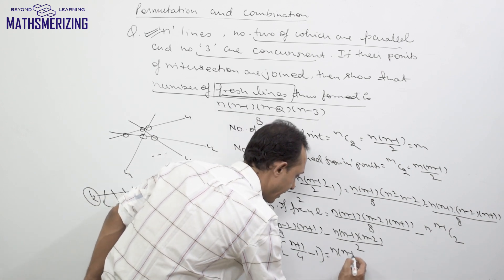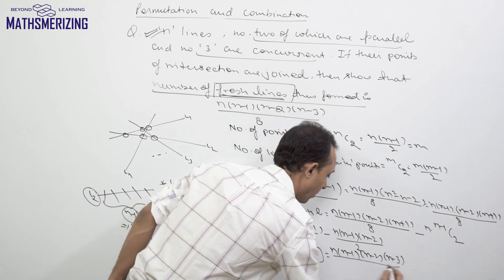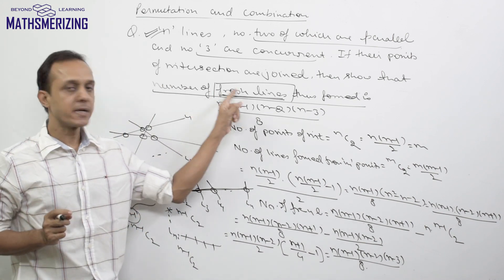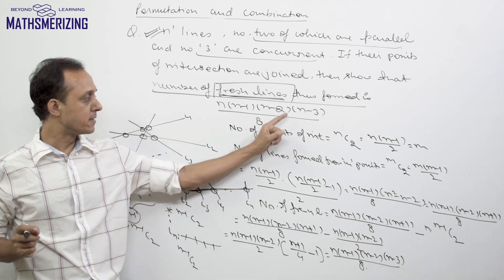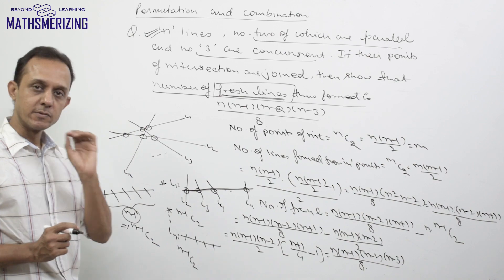Now it will be n(n-1)(n-2)(n-3) divided by 8. So the number of new lines or number of fresh lines thus formed is n(n-1)(n-2)(n-3)/8. This is how we solve these questions.